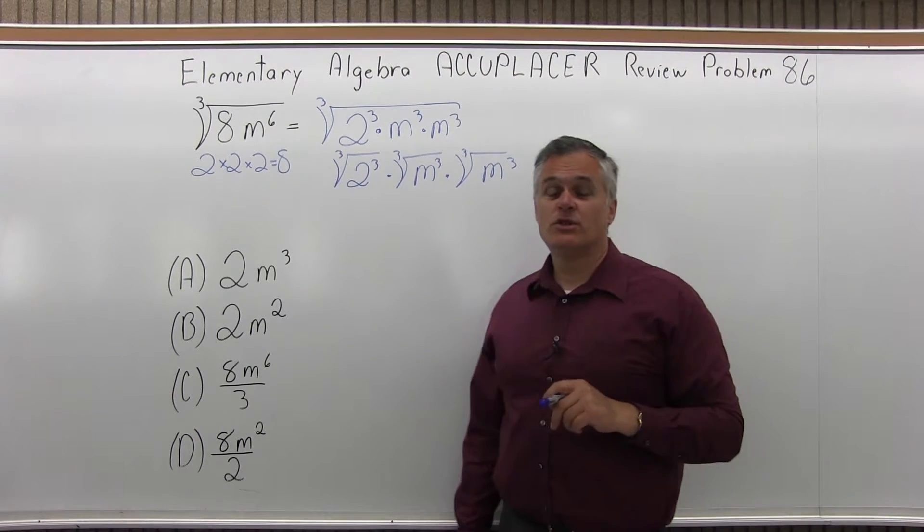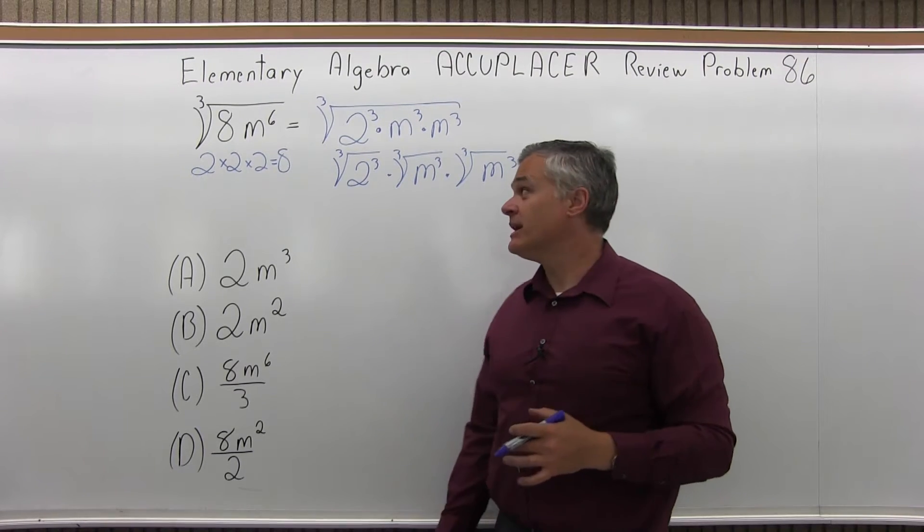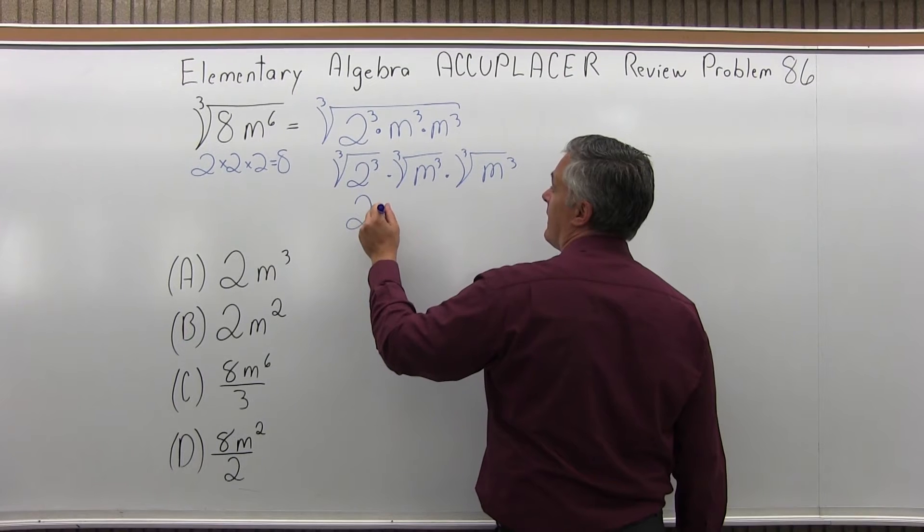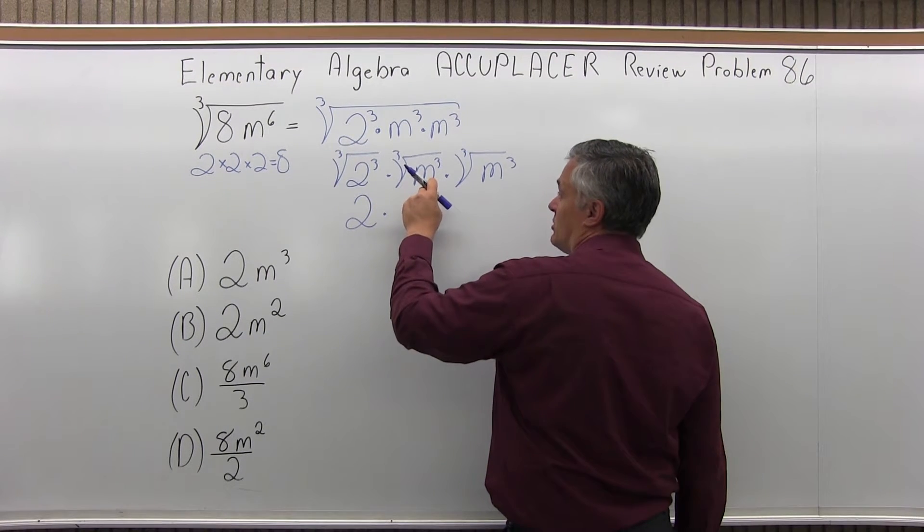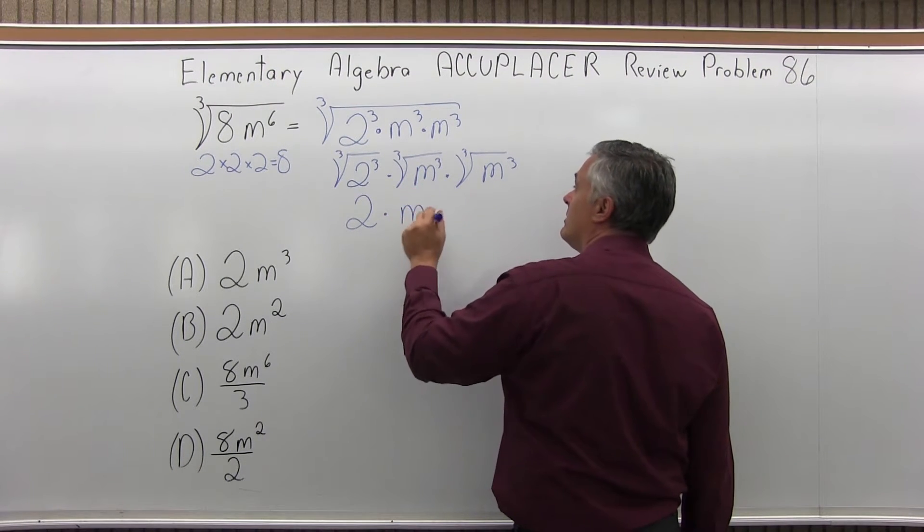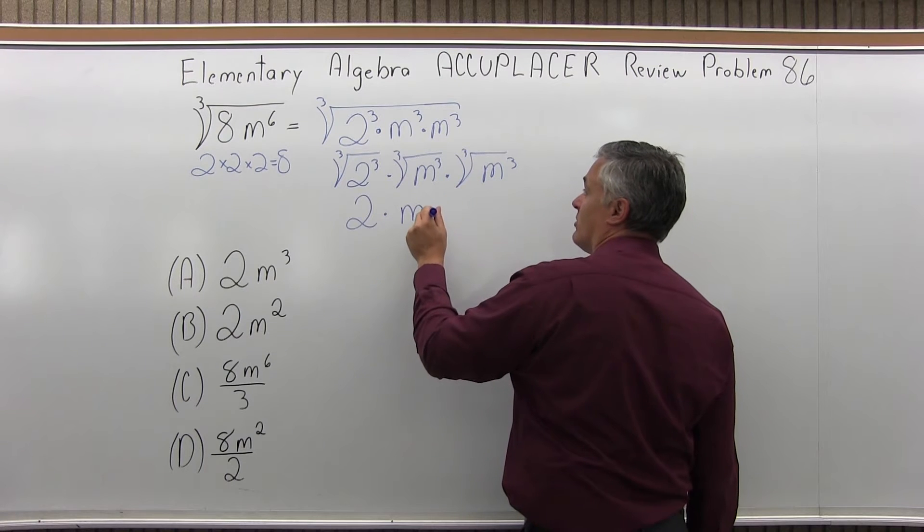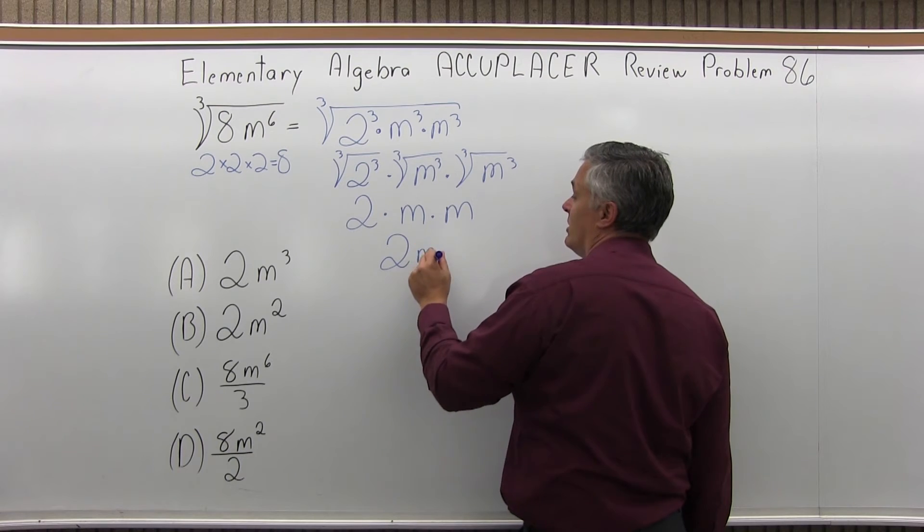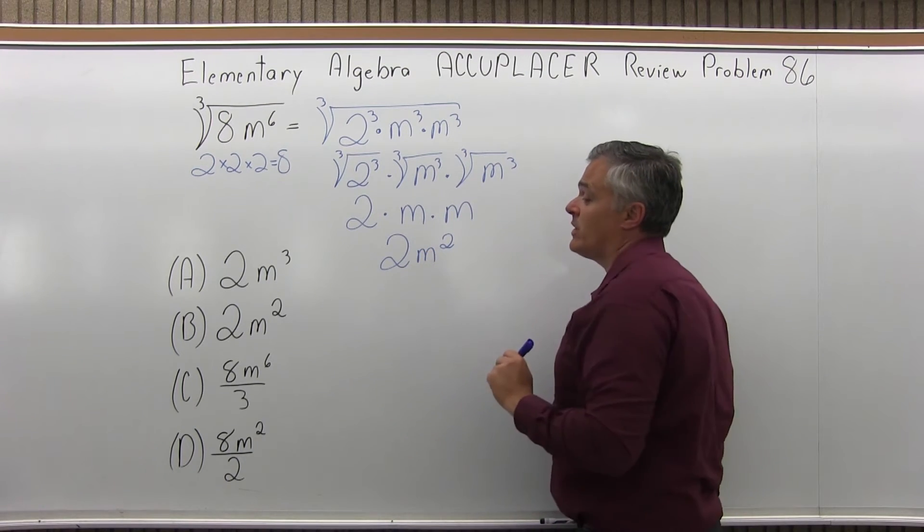And now each one of those cube roots can get undone into a nice whole number of values. The cube root of 2 cubed is just 2. And then times the cube root of m cubed is just m. And then the same thing again. The cube root of m cubed is m again. So I have 2 times m times m, which I can simplify into 2m squared.